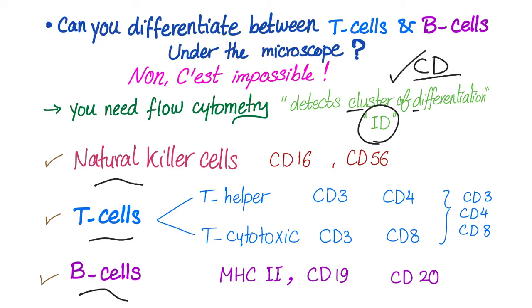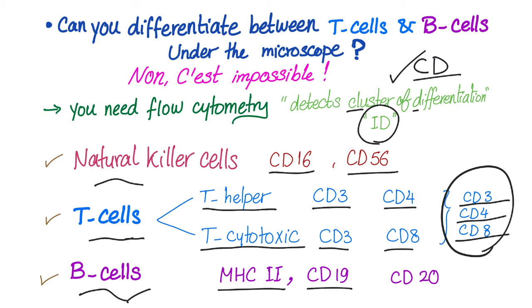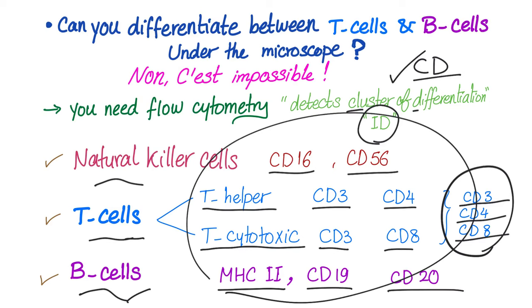Natural killer cells are CD16 positive and CD56 positive. T-cells can be T-helper — CD3 and CD4 — or T-cytotoxic — CD3 and CD8. Collectively, T-cells are CD3 positive, CD4 positive and/or CD8 positive. B-cells express MHC2, CD19, and CD20. If you know all of these, you know hematology and oncology pretty well.